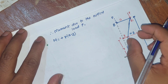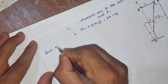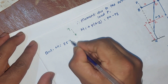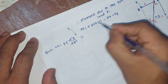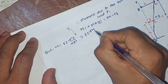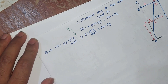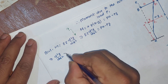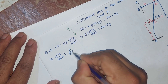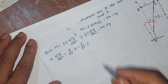The bending moment at section X is equal to P into the perpendicular distance, which is equal to P(a minus y). But M is equal to EI times d²y/dx². So we can write: EI d²y/dx² is equal to P·a minus P·y. Rearranging: d²y/dx² is equal to (P/EI)·a minus (P/EI)·y.